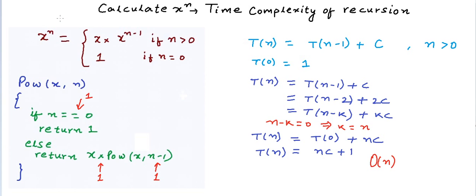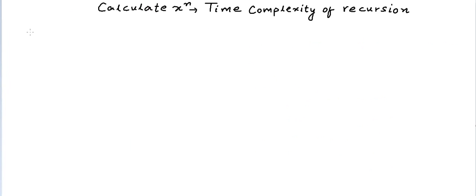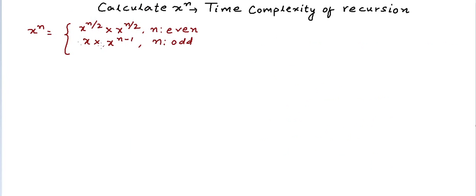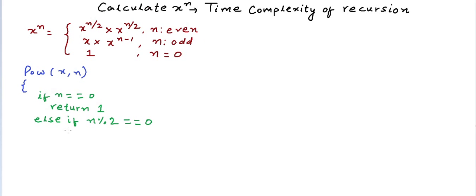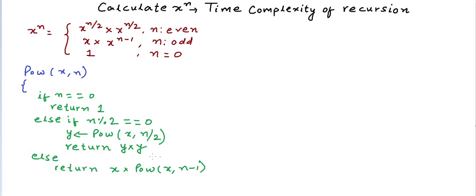Now let's analyze the second approach to calculate x to the power n. This time, we expressed x to the power n as x to the power n/2 times x to the power n/2 if n is even; x times x to the power n minus one if n is odd; and one for the base case n equals zero. The program returns one if n is zero, calculates x to the power n/2 and returns its square if n is even, else makes a recursive call for x to the power n minus one and returns the product with x. Again, the time taken is a function of n, not of x.